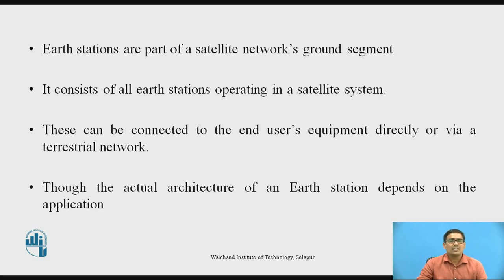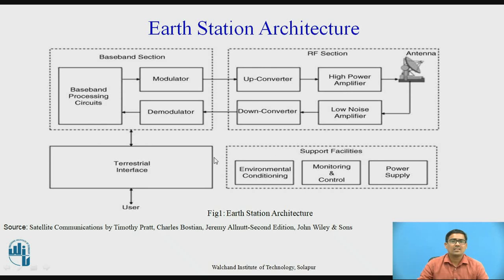Though the actual architecture of an Earth Station depends on the application, this is a general purpose Earth Station architecture. This is a generalized diagram of the Earth Station. Basically, an Earth Station consists of a baseband section, an RF section, and the third one is support facilities. The user is always connected to the baseband section with the help of the terrestrial interface.